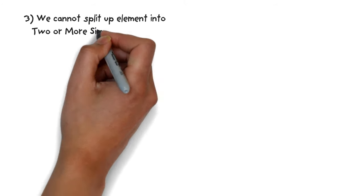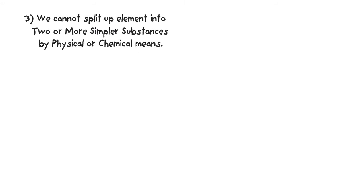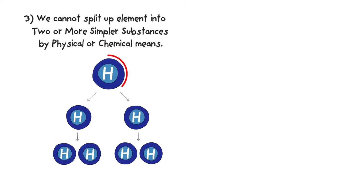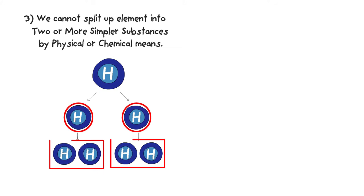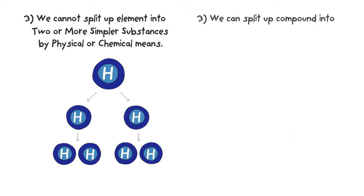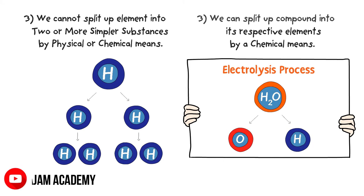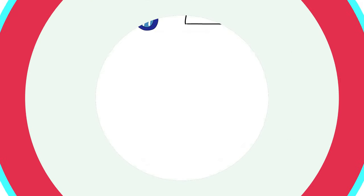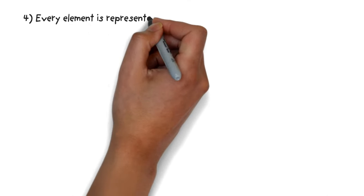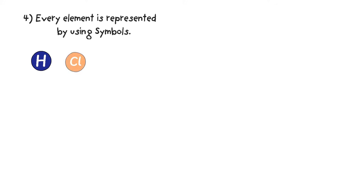Thus, the same atom of hydrogen chemically combined with other elements forms different compounds. Thirdly, we cannot split up an element into two or more simpler substances by physical or chemical means. For example, if you divide the element hydrogen, you still get hydrogen. While we can split up a compound into its respective elements by chemical means — for example, consider electrolysis: in this process, water is divided into hydrogen and oxygen.